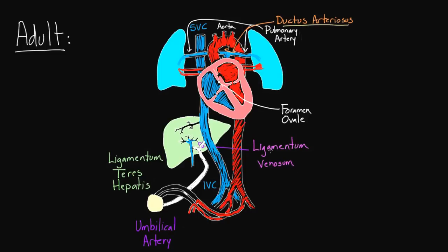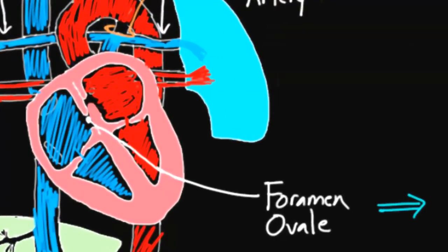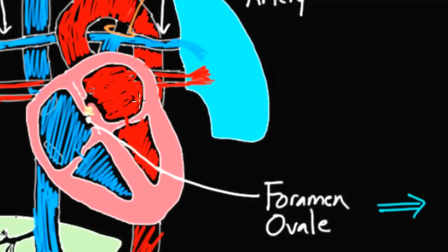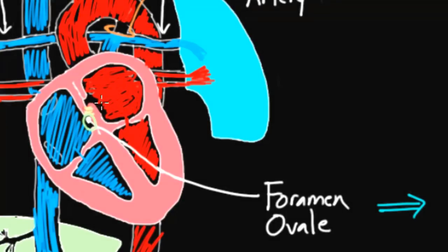So two ligamentums so far, and I promise we're going to have a few more before we're done. Moving on, we have blood entering the right atrium. You know blood in the fetus used to go from the right atrium to the left atrium through the foramen ovale. But then we talked about how it closes when the pressure on the left side gets higher than the pressure on the right side. When it closes, over time there's actually going to be some tissue that forms between those two flaps, creating a real seal. When that happens, that space becomes known as the fossa ovalis.